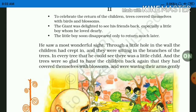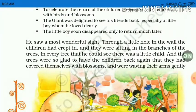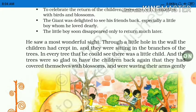Now we will read the text. He saw a most wonderful sight through a little hole in the wall — the children had crept in. जब बच्चे जाइंट के गार्डेन में खेलते थे, वो selfish था इसलिए उसने अपने गार्डेन के चारों तरफ दीवार खड़ी कर दी। उस दीवार के छोटे hole से कुछ बच्चे अंदर देख रहे थे, and they were sitting in the branches of the tree.